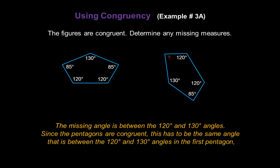Now, since the pentagons are congruent, this has to be the same angle that's between the 120 degree and 130 degree angle in the first pentagon. And that's the 85 degree angle. So now we have our answer. The missing angle is 85 degrees.